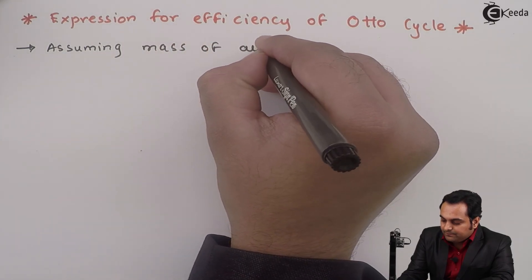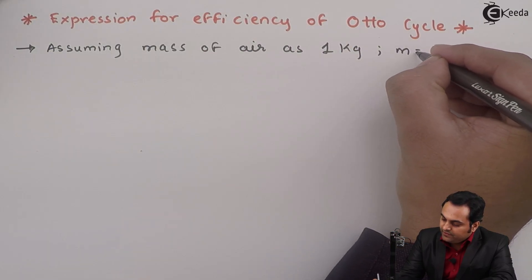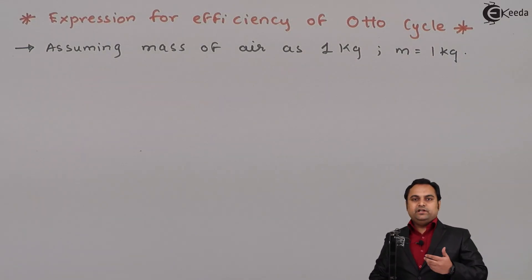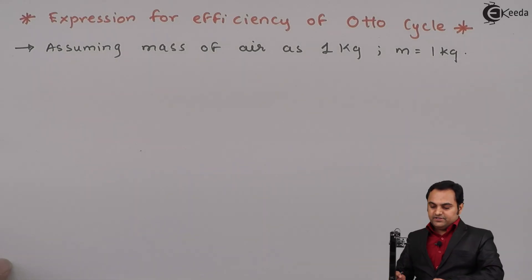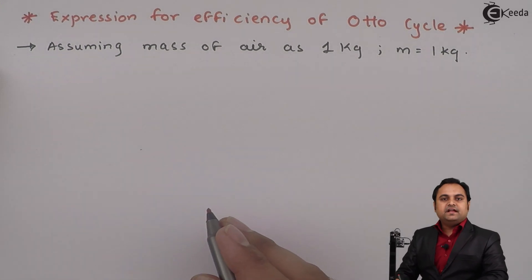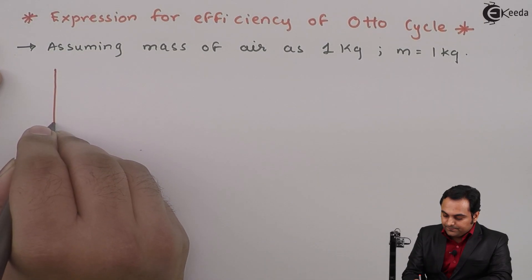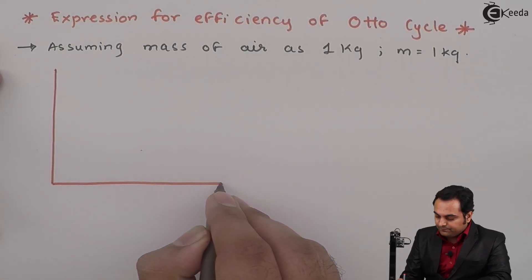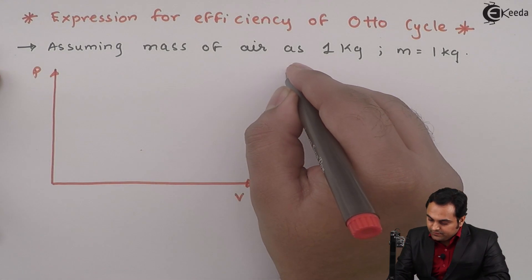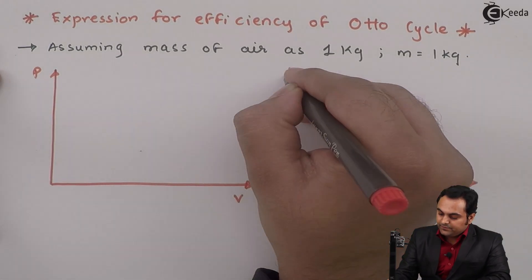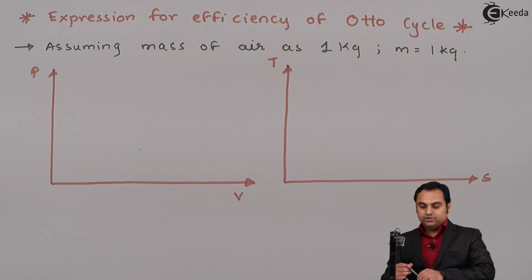...mass of air as 1 kg, that is m = 1 kg. So whatever analysis we are doing is on 1 kg mass of air. In the expression here, first I will draw the PV and TS diagram for Otto cycle. The PV diagram is pressure versus volume, and the TS diagram is temperature versus entropy.